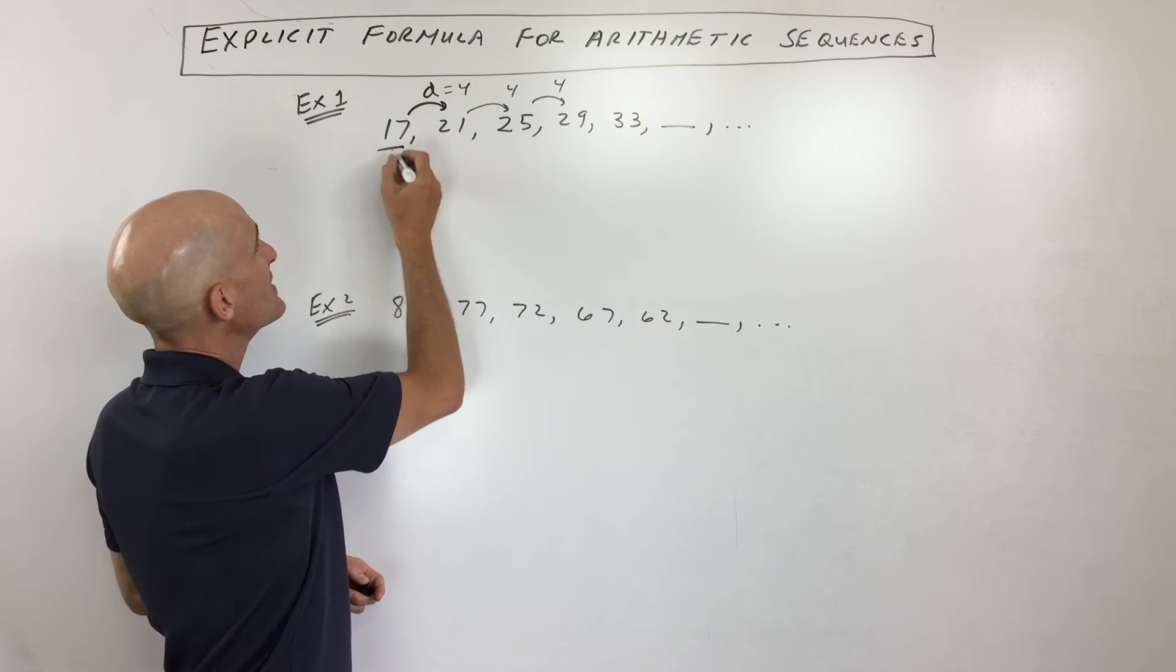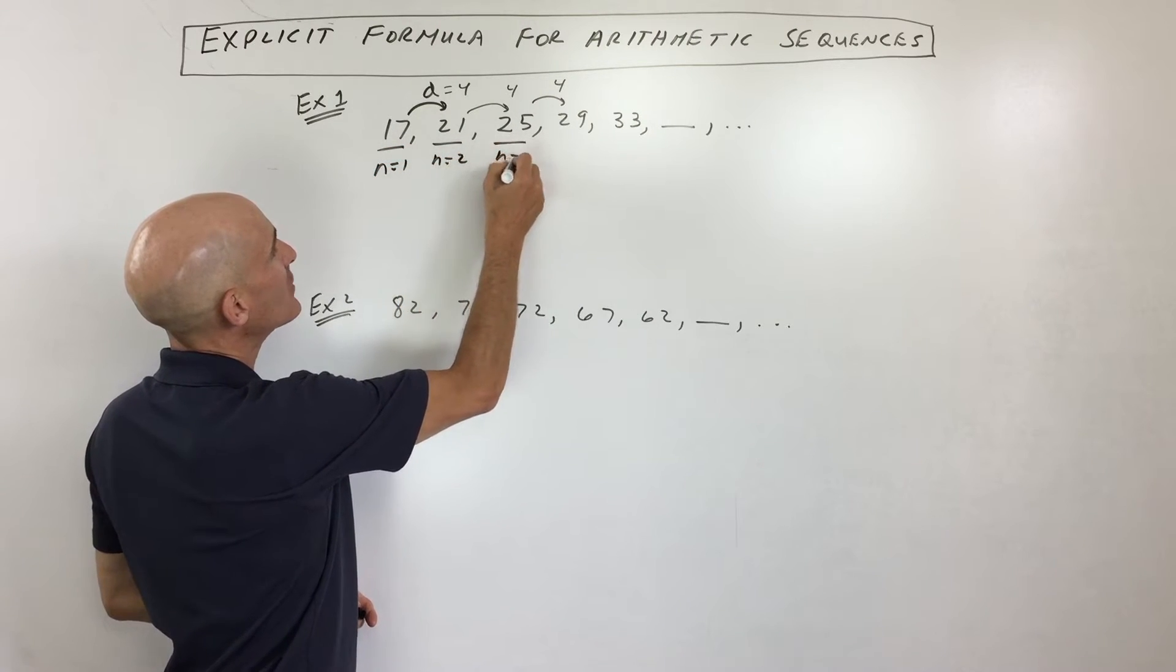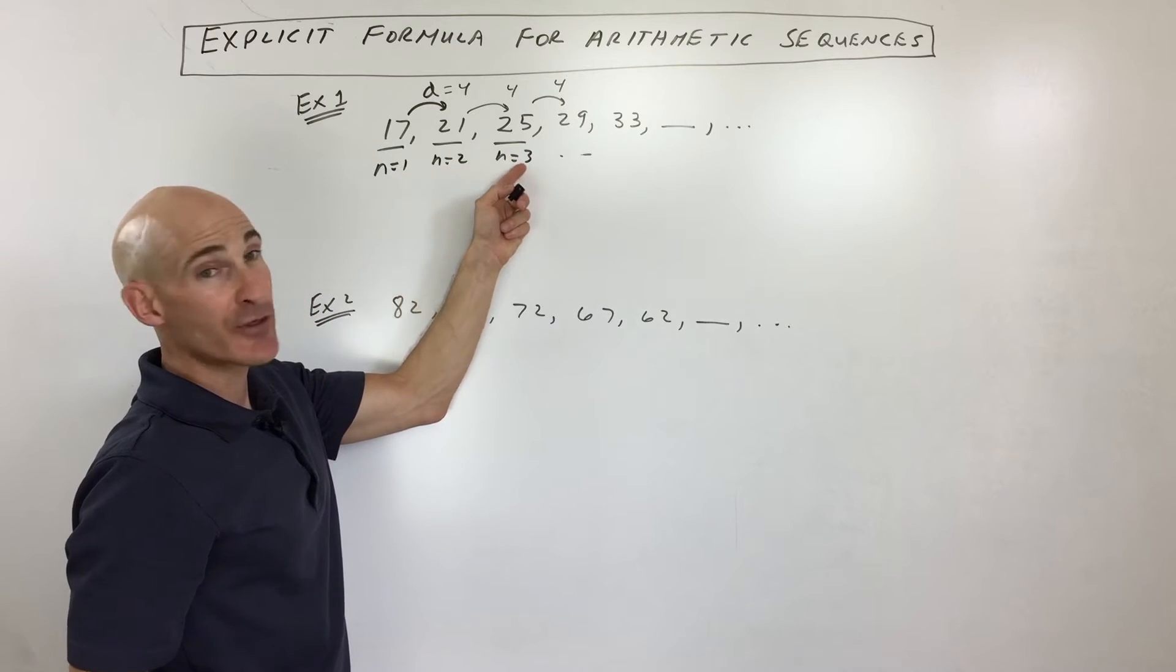Now, the next thing I wanted to mention to you is that this is actually called n equals 1, n equals 2, n equals 3, and so on. This means this is the first term, second term, third term.